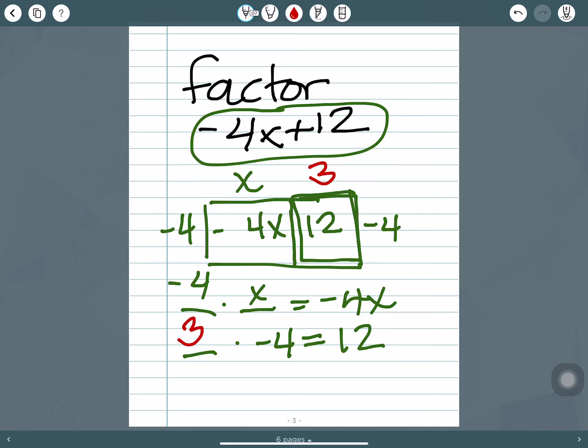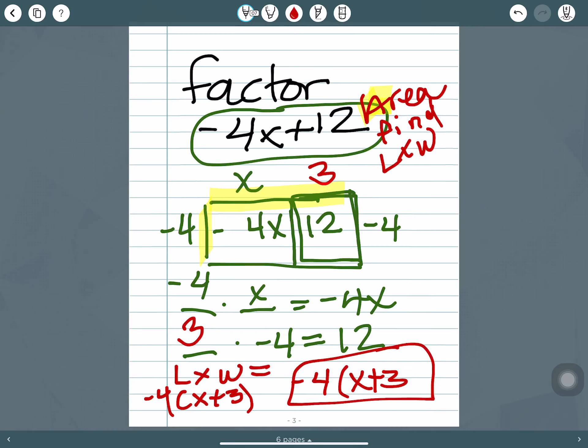So when we're factoring, we're trying to find the length and width, and we're given the area. So think about that. This is the area, and you're trying to find what times what gives you that area. So the final solution, length times width, the length is x plus 3, and the width is negative 4. And I like to write the single number in front so it doesn't look like a minus 4. And there you have it, negative 4 times x plus 3 is the solution to that.